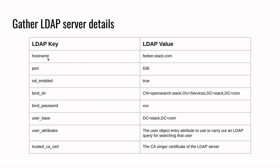The first item is the hostname, which is the LDAP server hostname. The port is where exactly the LDAP server is listening. If your LDAP server is listening on a secure port, it will default to 636; otherwise it will be 389, which is a non-secure port. In my case it is 636, which is the secure port. SSL enabled is true because we are listening on a secure port.